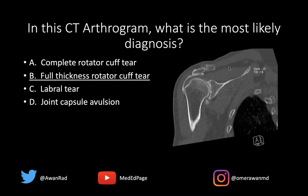The only way that contrast can go from the glenohumeral joint all the way into the subacromial subdeltoid bursa is that it has to traverse the thickness of the rotator cuff. This is the supraspinatus muscle, and this is the tendon. The only way to get from here to here is to breach the entire thickness of the tendon, thus making this a full thickness rotator cuff tear.